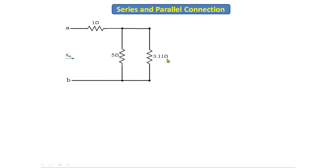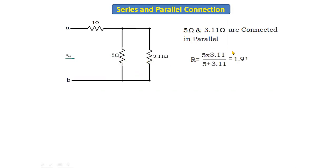Now the 5 ohm and 3.11 ohm resistors are connected in parallel. Applying the parallel formula R = (R1 × R2) / (R1 + R2), we get (5 × 3.11) / (5 + 3.11) = 1.91 ohms.